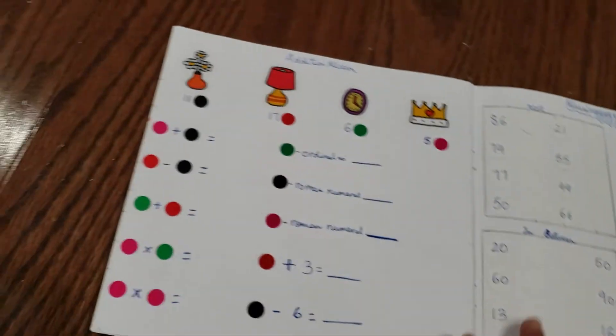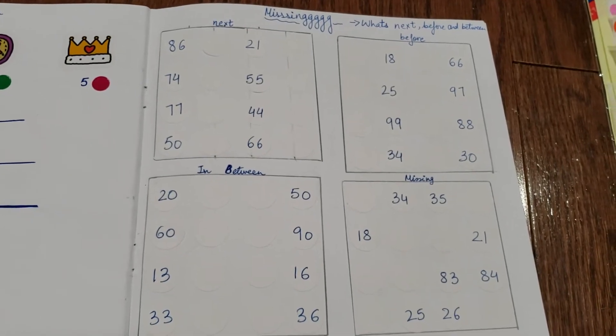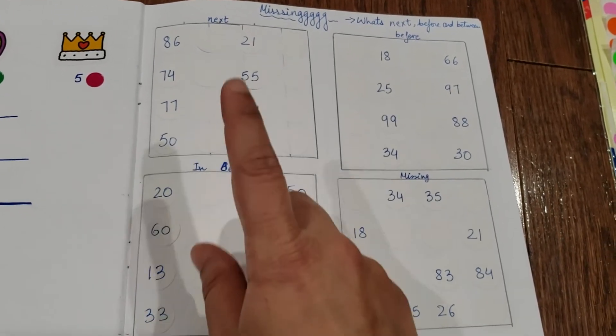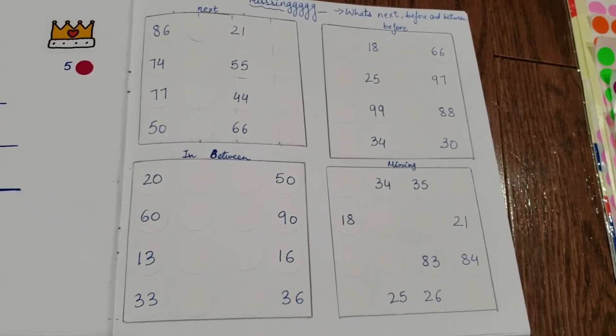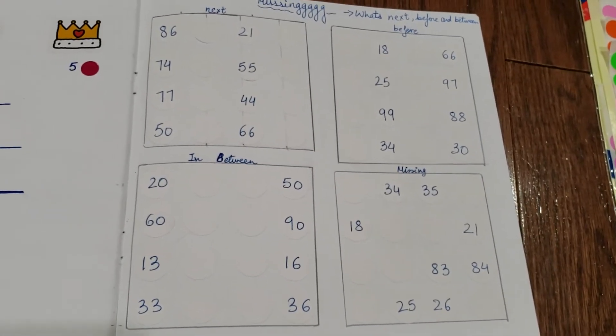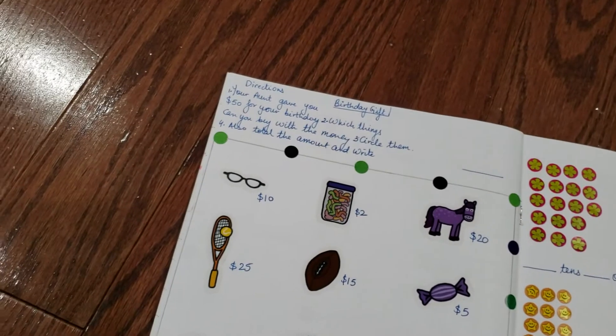Here we have what's missing: what's next, before, between, and after. He needs to finish that. I've used my dot marker stickers here to just make it easy and look more even.